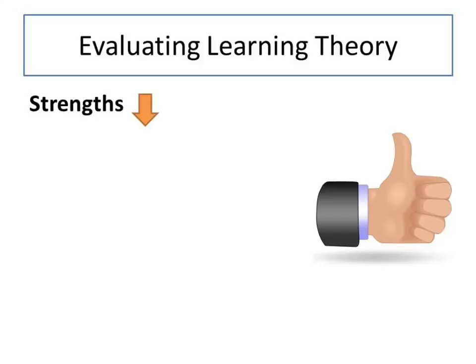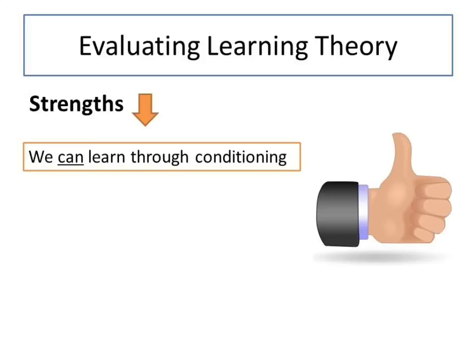In order to evaluate learning theory and assess whether it provides a good explanation of where attachments come from, we need to identify some strengths and weaknesses. One strength is that it has been widely established that we can learn various behaviours through conditioning, so it's possible that attachments might also be learned in this way.